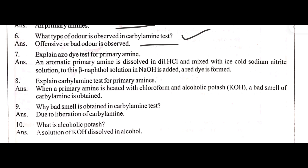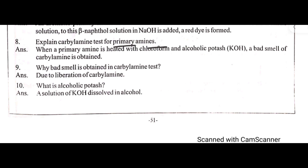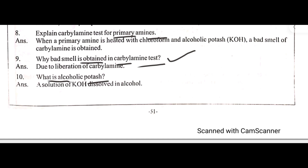Explain the azo dye test for primary amines. Explain the carbylamine test for primary amines. Why is a bad smell obtained in the carbylamine test? What is the alcoholic potash? These are all the possible viva questions in chemistry annual practical exam. If you prepare these questions you will easily get marks for viva questions. Thank you, wish you all the best for your exams.